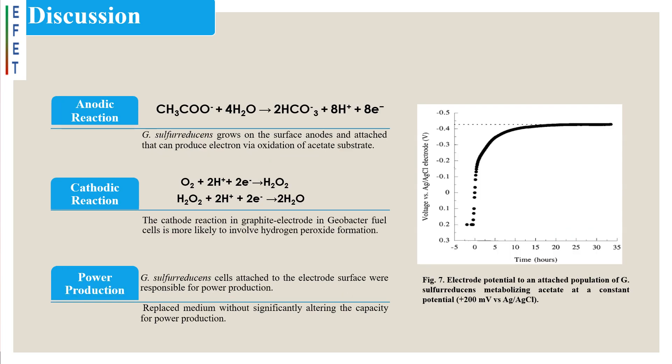Discussion section: Anodic reaction observation. Geobacter sulfereducens grows on the surface of energy harvesting anodes in mediator-free microbial fuel cells, forming a stable, attached population that can effectively catalyze the transfer of electrons from the oxidation of acetate to graphite electrodes and produce electrical current.